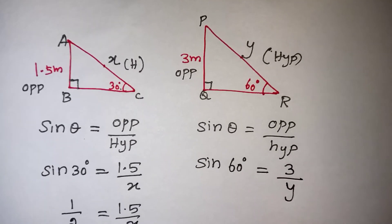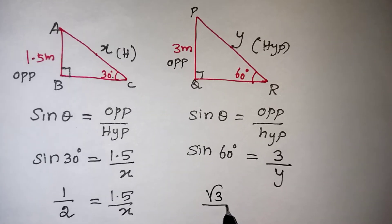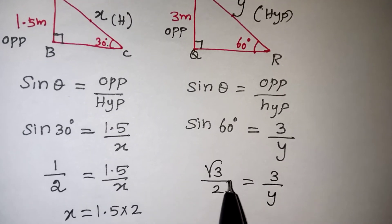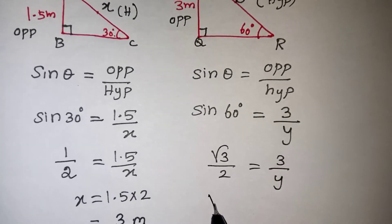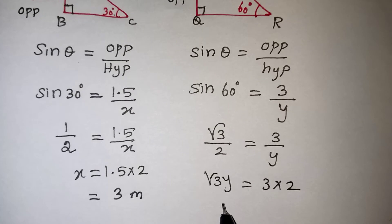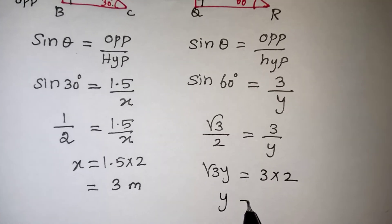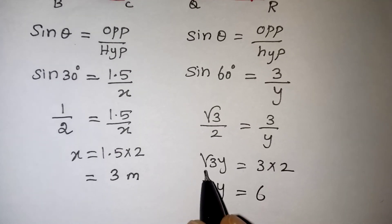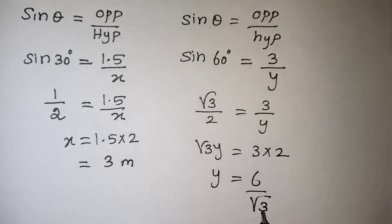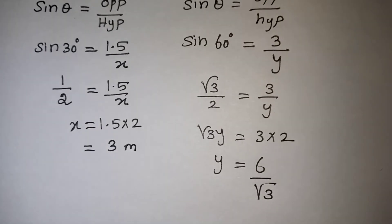Now sin 60 degree from the table, root 3 by 2, which is equal to 3 by Y. Now we have to bring the Y to this side, 2 to that side. So root 3 Y is equal to 3 into 2. Now Y is equal to, actually 3 twos are 6. This is a multiplication root 3. If we bring it to this side, that will become a division. So we are getting 6 by root 3.